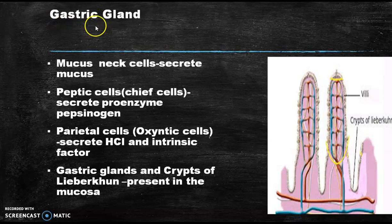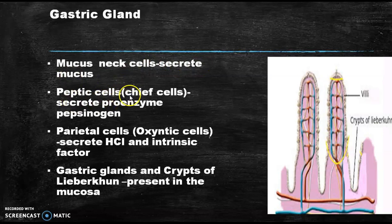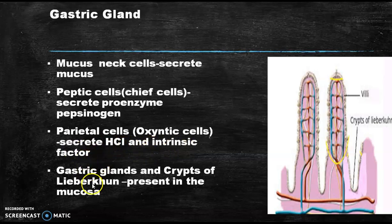The gastric gland contains many types of cells. The mucus neck cells secrete mucus. Peptic cells, otherwise called chief cells, secrete the proenzyme pepsinogen. Parietal cells, otherwise called oxyntic cells, secrete HCl (hydrochloric acid) and intrinsic factor. All gastric glands and crypts of Lieberkühn are present in the mucosal region. The finger-like projections called villi are present in the intestinal mucosa and help in absorption of food.